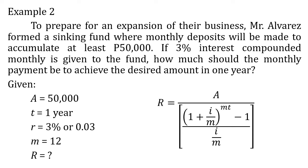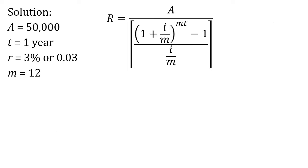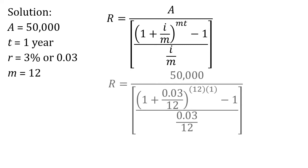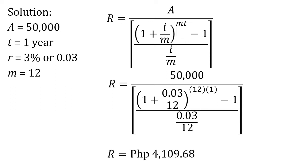Again we are going to use the same formula. Substituting the values of A, t, r, and m: 50,000 divided by (1 plus 0.03 divided by 12) raised to 12 times 1, minus 1, all over 0.03 divided by 12. Computing this, you arrive at 4,109.68. This means that the monthly sinking fund payment is 4,109 pesos and 68 centavos.